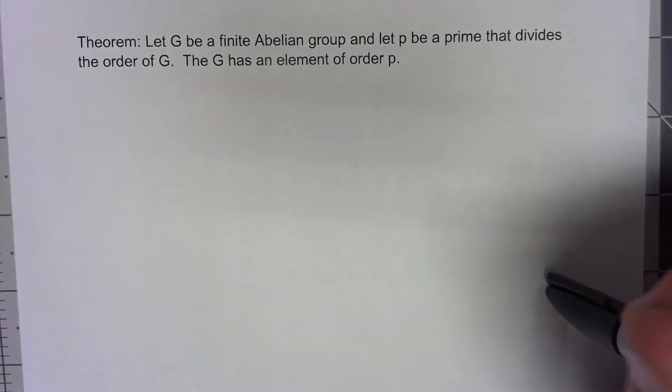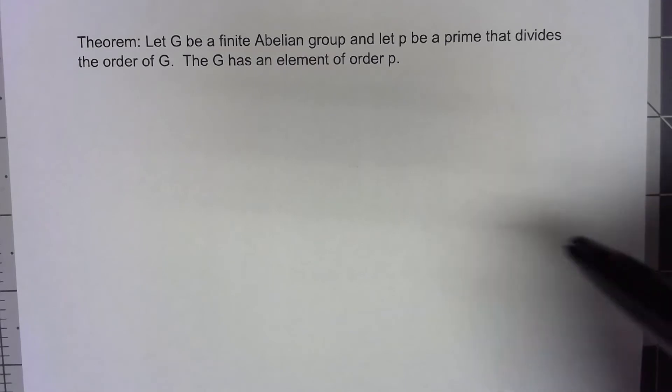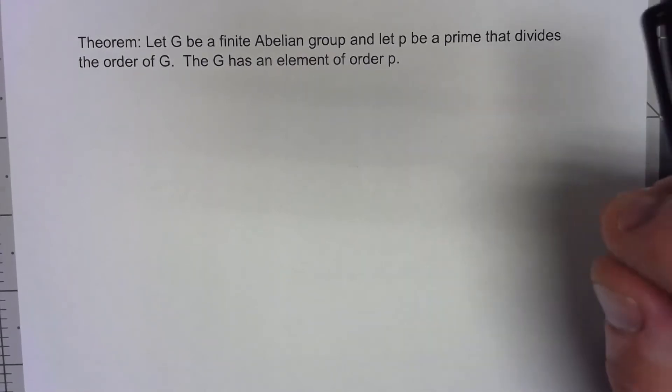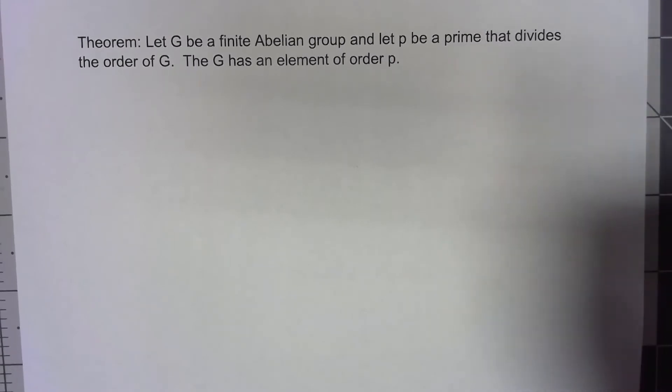Let's suppose we have a finite abelian group and let P be a prime that divides the order of G. Then G has to have an element of that order.